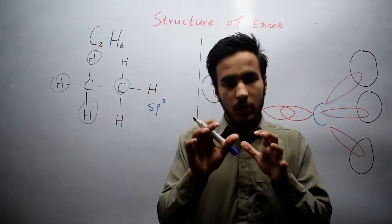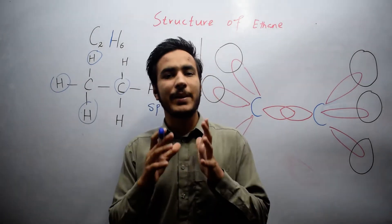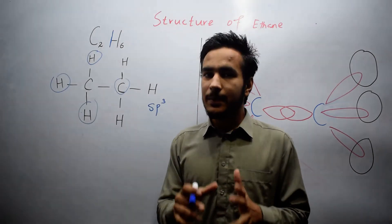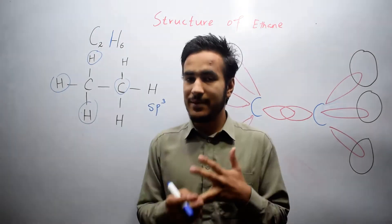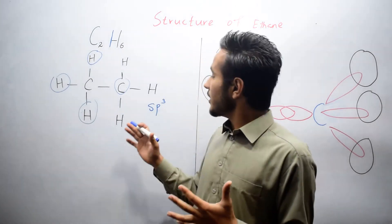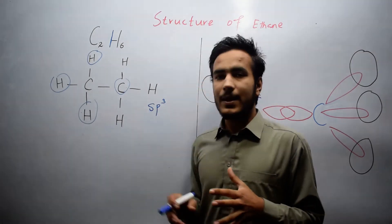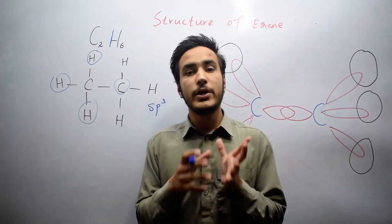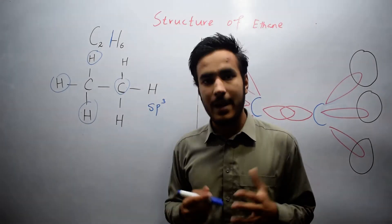Now, what is hybridization? Hybridization is the phenomenon in which mixing of atomic orbitals takes place to form new orbitals of the same shape, same size, and same energy. Here, three p orbitals and one s orbital mix with each other and they form new orbitals known as sp3 hybrid orbitals.